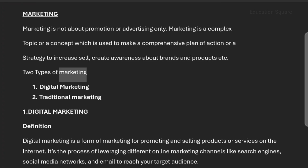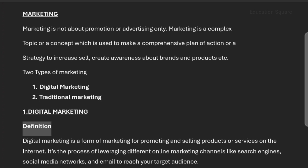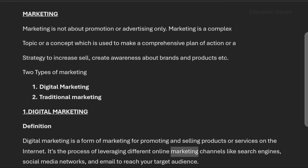There are two types of marketing: Digital Marketing and Traditional Marketing. Digital Marketing is a form of marketing for promoting and selling products or services on the internet. It's the process of leveraging different online marketing channels like search engines, social media networks, and email to reach your target audience.